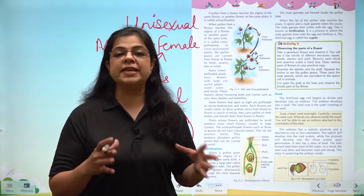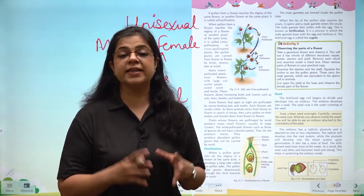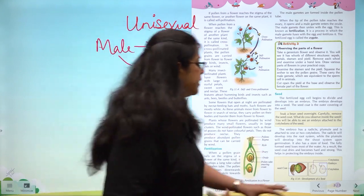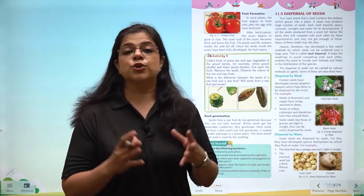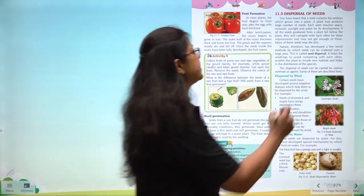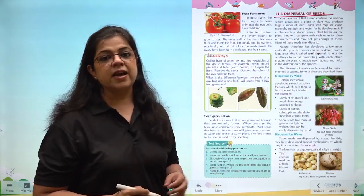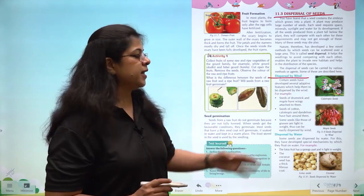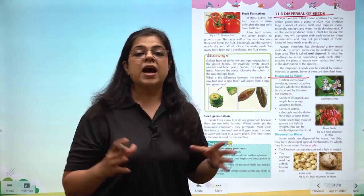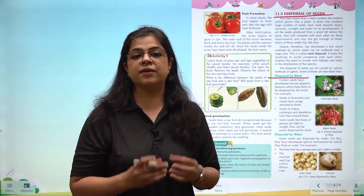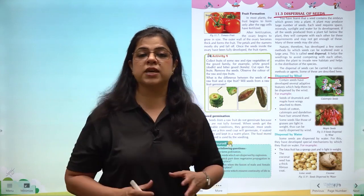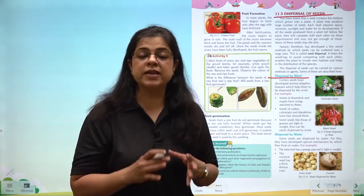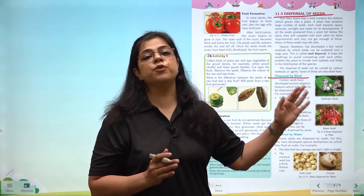We have learned how a seed is formed inside the plant. Now let us understand how seeds are transferred from one plant to the soil or another location where they can grow into a new plant. This process is known as dispersal of seeds. Seeds dispersed by wind, like maple or sycamore seeds, are very light and have hair-like structures or wings that allow wind to carry them from one place to another.